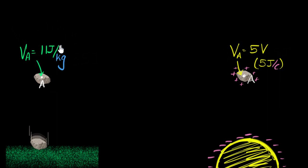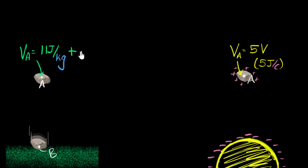So when that rock goes from here to the ground, it would have lost all that 11 joules of potential energy. What we are really saying when we say V_A equals 11 joules per kilogram — and this is important — is that if I call this lower point B, then what we are really saying is that the potential at point A is 11 joules per kilogram more than the potential at point B.